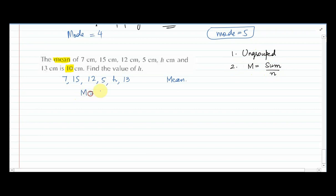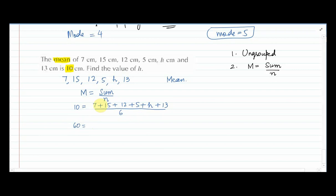Applying the formula: mean = sum/n. So 10 = (7+15+12+5+h+13)/6. Cross-multiplying: 6×10 = 60. Adding the known values: 7+15=22, 22+12=34, 34+5=39, 39+13=52. So 60 = 52+h, therefore h = 60−52 = 8. An easy question of ungrouped data.